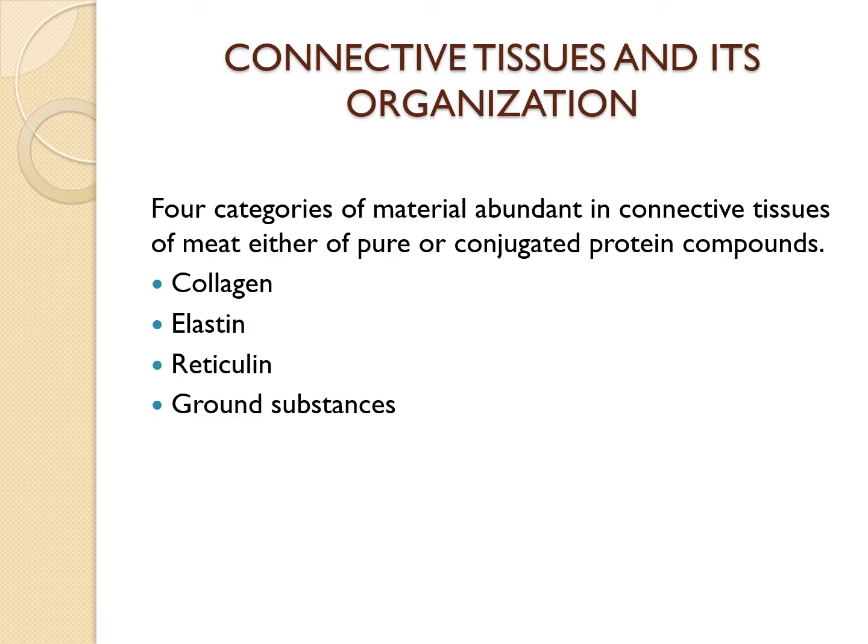The four categories of material that are abundant in the connective tissue of meat are either pure protein or conjugated protein compounds. These are collagen, elastin, reticulum, and ground substances.